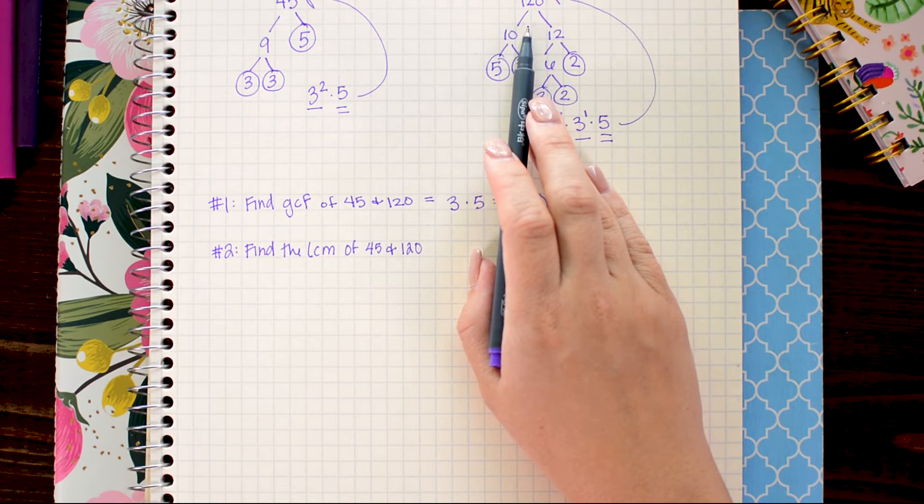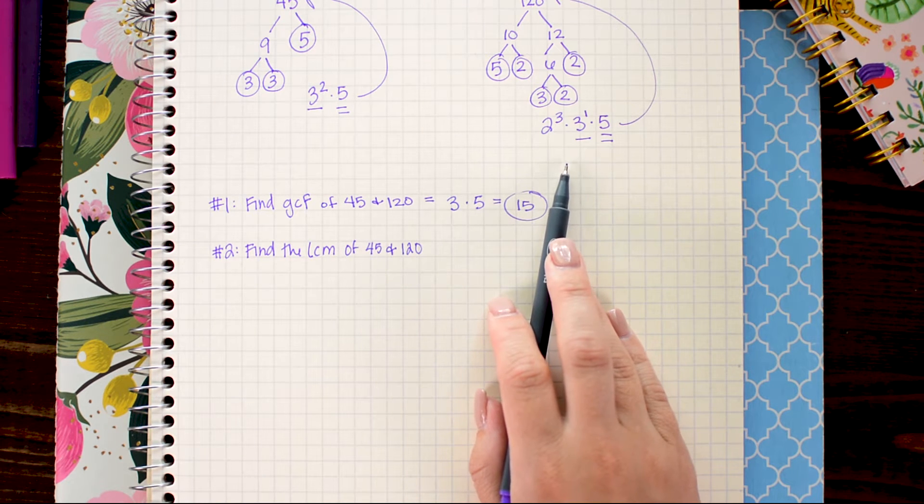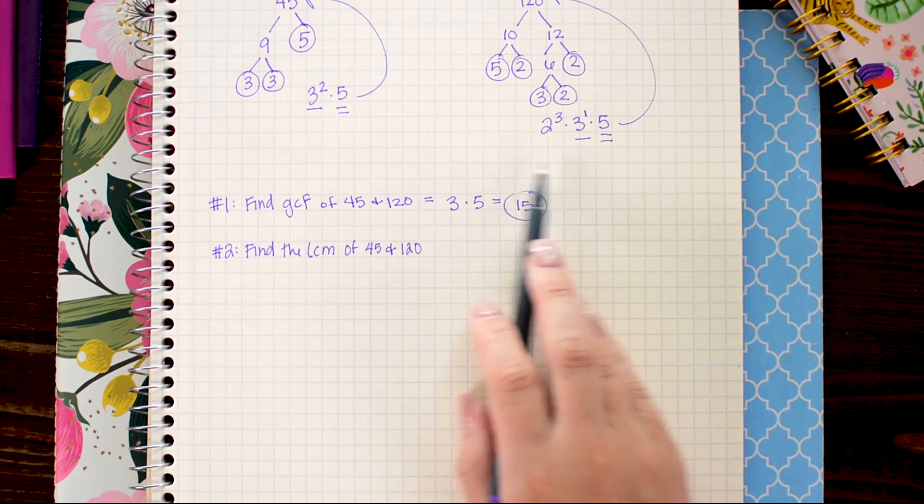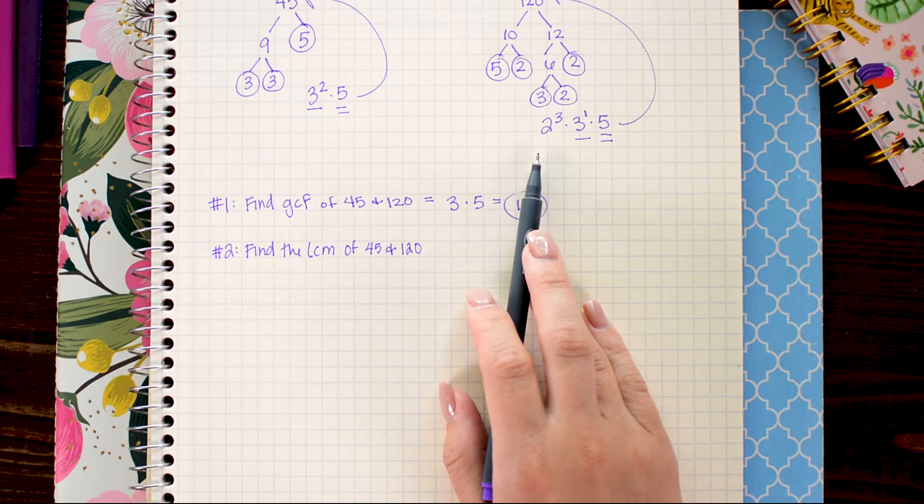But this is all about finding those shortcuts using the prime factorizations. So to do that what we're going to do here is take the largest multiple from each of these prime factorizations and multiply it all together.